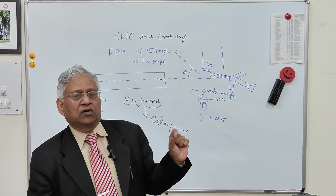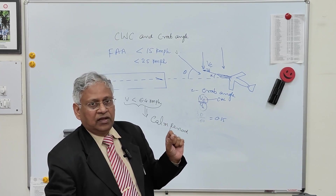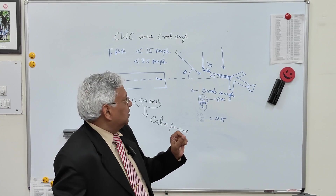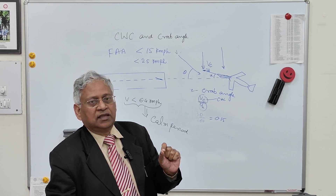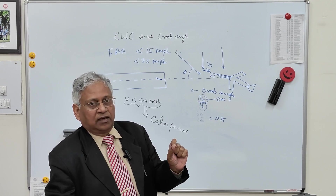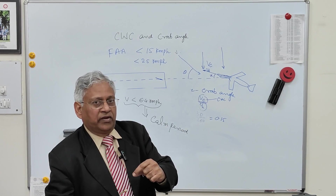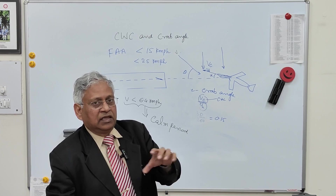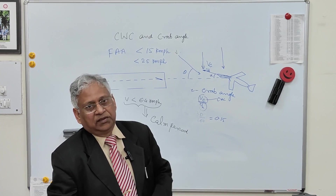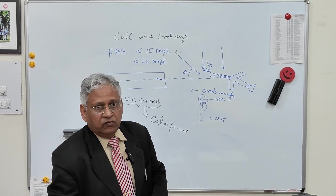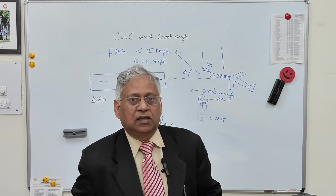So that is the concept of crosswind component and crab angle of an aircraft. In the next session we will discuss the wind rose diagram and how we mark the center line of the runway given the wind data. Thank you very much for watching this video — you can write your suggestions in the comment box.